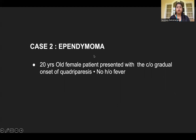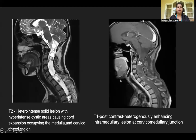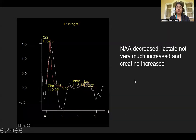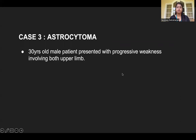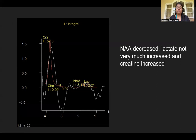The second case is ependymoma. A 20-year-old female patient presented with a complaint of gradual onset of quadriparesis. There was no history of fever. T2 showed a heterointense solid lesion with hyperintense areas causing cord expansion occupying the medulla and cervical dorsal region. T1 post-contrast showed a heterogeneously enhancing lesion at the cervical medullary junction. MRS showed decreased NAA; lactate was not very much increased and creatine was increased. Biopsy confirmed low-grade glioma.